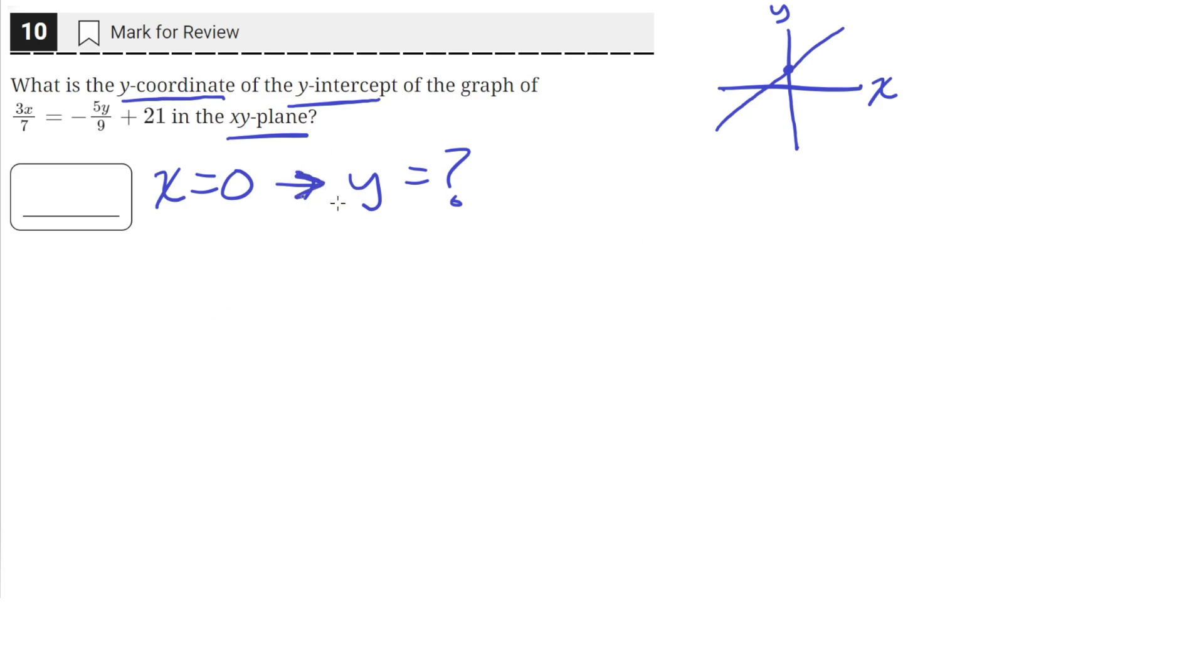So let's do that now. We just need to rewrite this equation with x equaling 0. So we'll have 3 times 0 over 7 equals negative 5y over 9 plus 21.